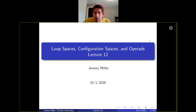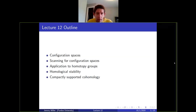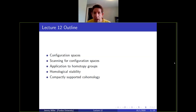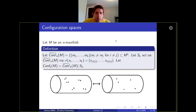Last time we proved duality by showing space-level homology and space-level cohomology are homotopy equivalent. We're moving on to a slightly different topic: classical configuration spaces. There's scanning for these and we'll talk about applications to computing homotopy groups of spheres, then homological stability, and then I'll introduce compactly supported cohomology, which will be one of the tools we use to improve stability.